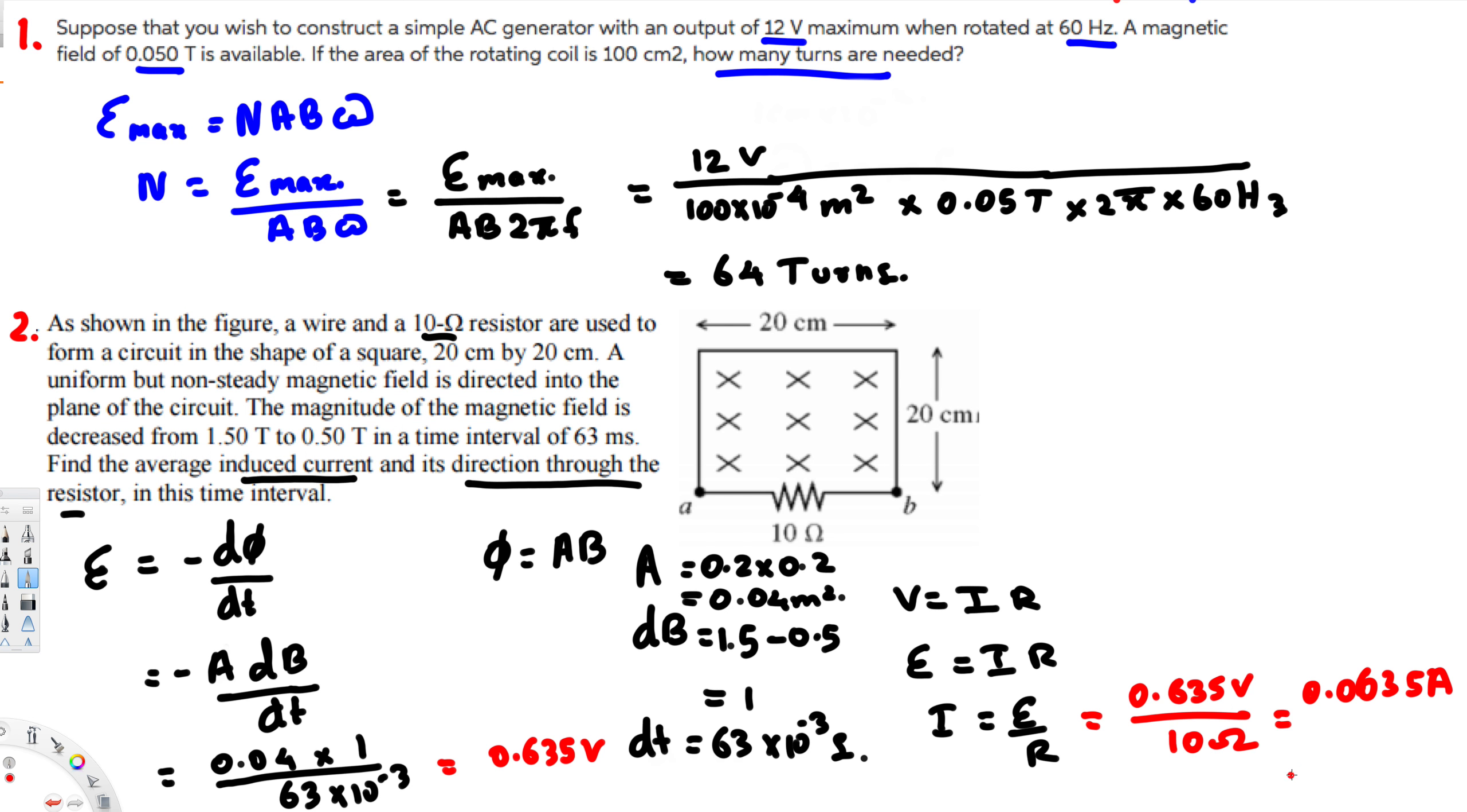Now we have to decide the current's direction. What's going to happen is: if the external field is decreasing into the page, they have mentioned that it's going into the page and it's decreasing from 1.5 to 0.5, so then by Lenz's law, what's going to happen is the induced current opposes the change, so it produces a field into the page. We know that if the magnetic field is into the page, this should go clockwise. So if it goes clockwise, then it passes through b to a. So the direction is going to be b to a. I hope you guys find this video helpful. See you next time.